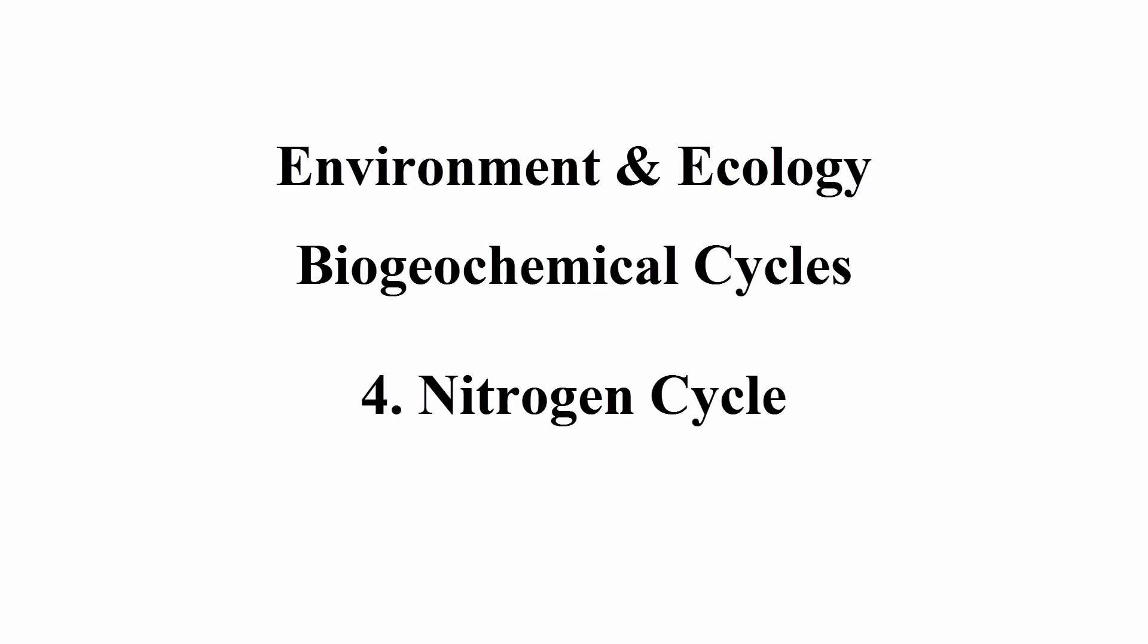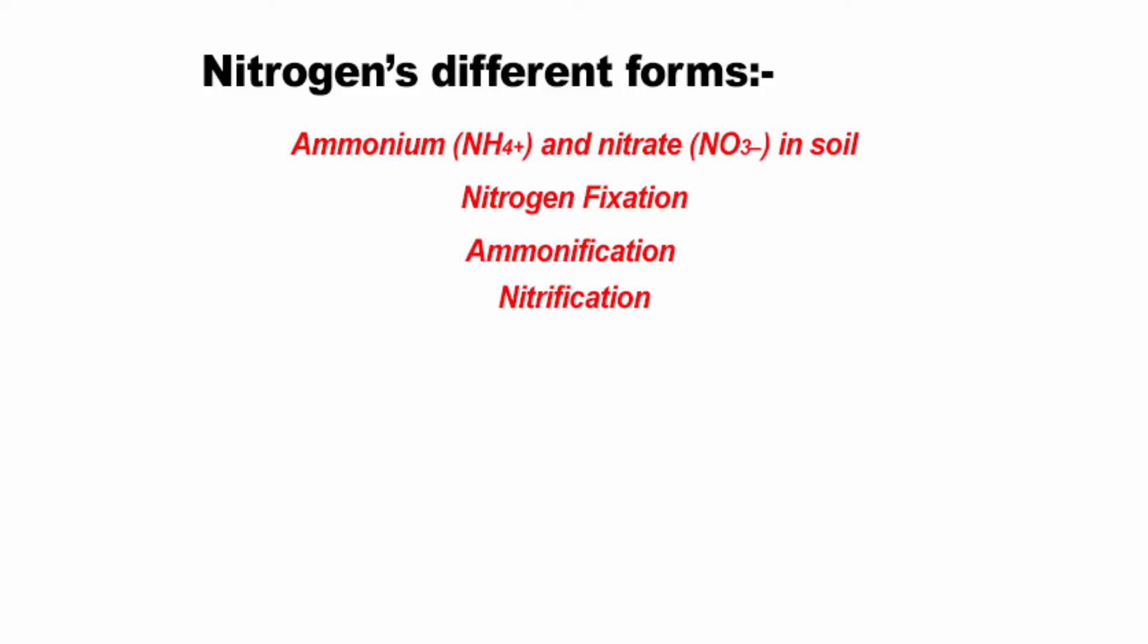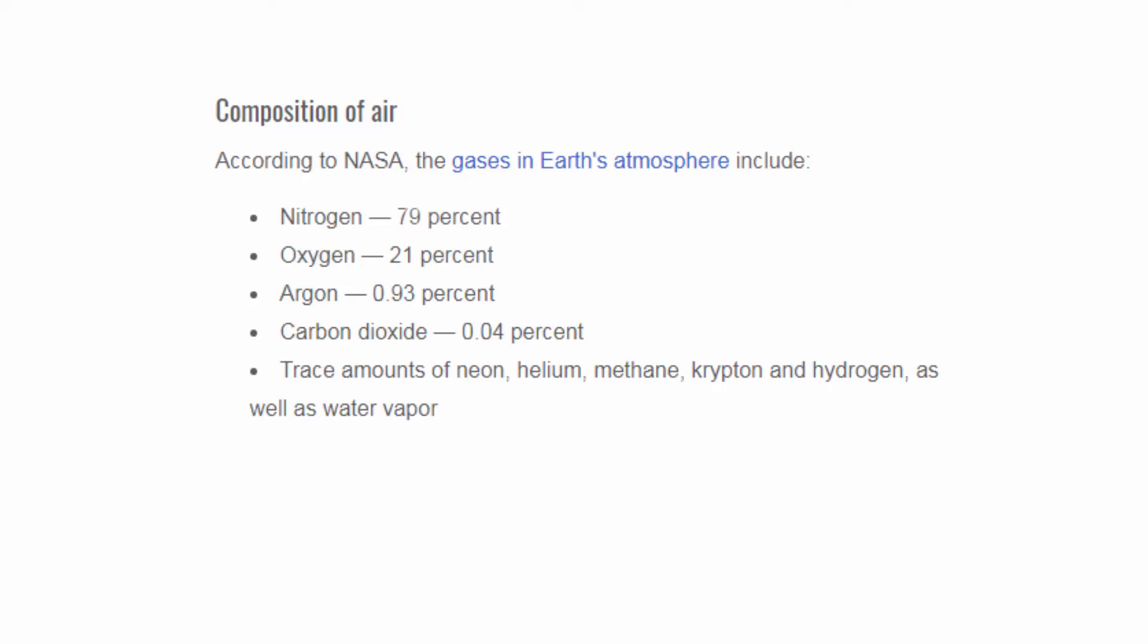The fourth one is nitrogen cycle. This whole nitrogen cycle is all about how nitrogen transforms into different forms in our environment. Nitrogen is a major constituent of the atmosphere, comprising about 79% of atmospheric gases. Therefore, it is important to understand how the nitrogen cycle works.